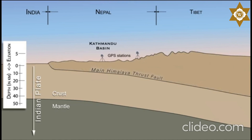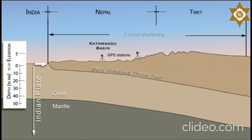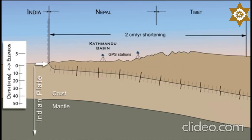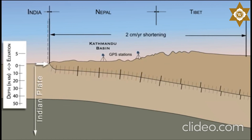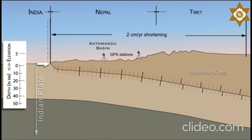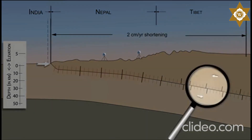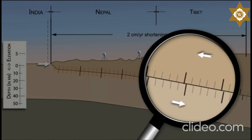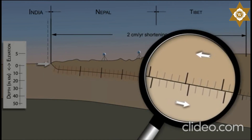The Indian Plate pushes the leading edge of the Eurasian Plate northward, shortening the overriding crust by over 2 centimeters per year. On the deeper, low-friction part of the plate boundary, this displacement occurs by slow creep with few earthquakes.